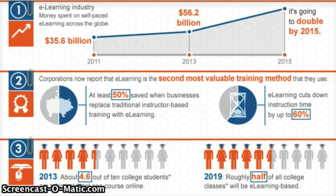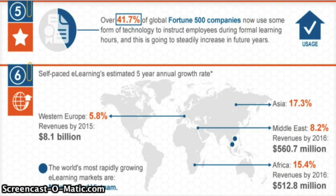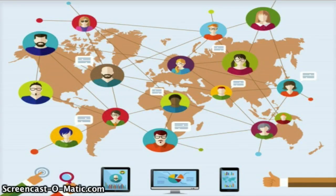Major corporations found that they were able to save both time and money when they made the change from instructor-based training to some sort of e-learning. It has been projected that over half of all college classes will be e-learning based by 2019. E-learning is not restricted to the United States — it has high annual growth rates projected to produce massive amounts of money throughout Europe, Asia, and the Middle East, allowing businesses and schools to tap into knowledge from some of the brightest minds throughout the world.